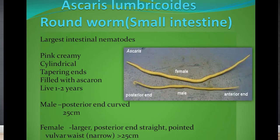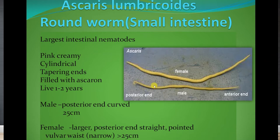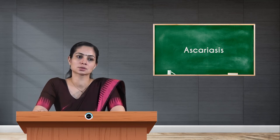Ascaris lumbricoides are intestinal parasites found in the small intestine, also called roundworms. They are one of the largest intestinal nematodes and possess all the general properties of a nematode. The adult worm is pink or creamy in color, cylindrical with tapering ends. Inside the body there is a fluid called ascarone, which is allergenic — when it leaks out it leads to allergic reactions in the patient. These parasites live for around one to two years.